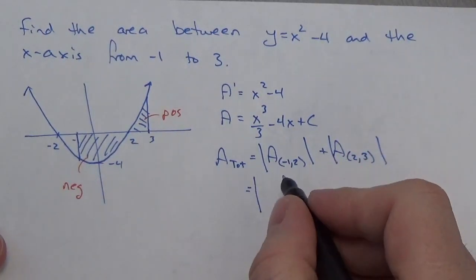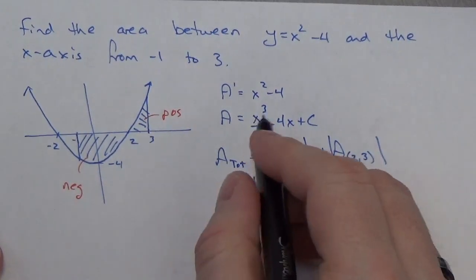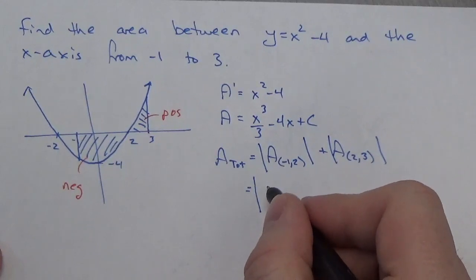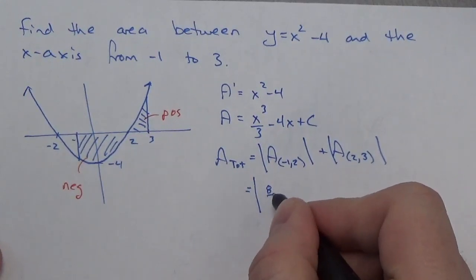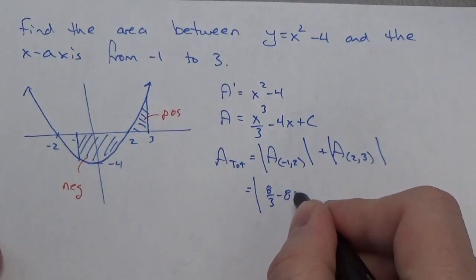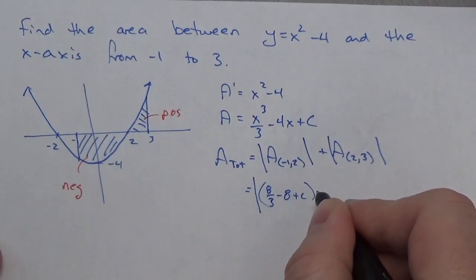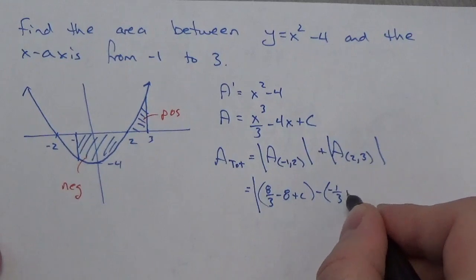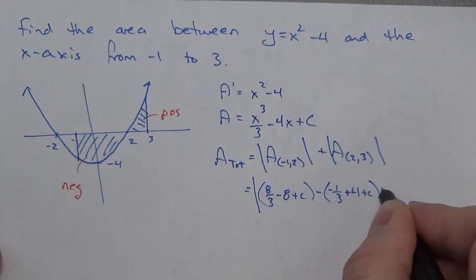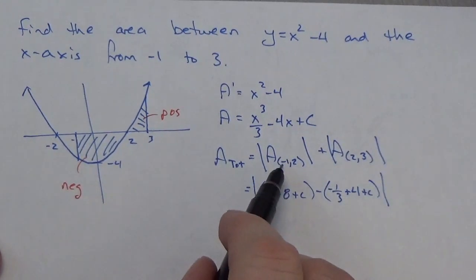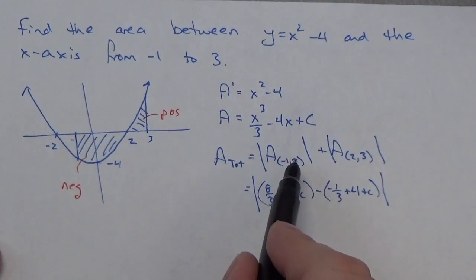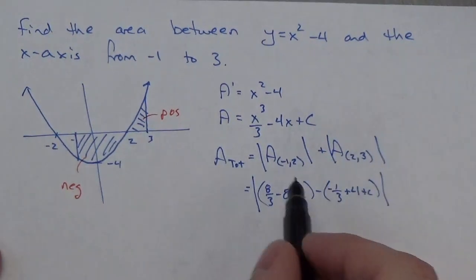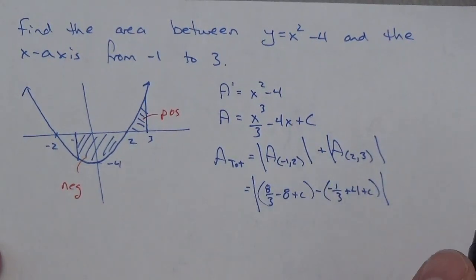And so now, this is going to be the absolute value, and this will be, plugging in 2 into this, this will be 8 thirds, okay, minus 8 plus c, minus negative 1 third plus 4 plus c. Okay, so that's just me plugging in my limits. Remember, I'm taking the limit to the right, evaluating it, then subtracting it, evaluating the limit to the left,